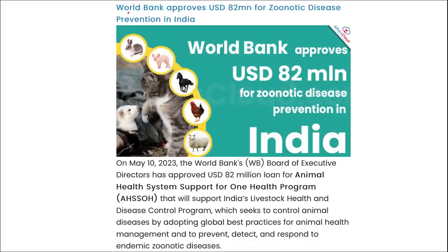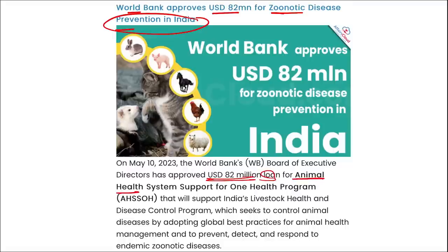World Bank approved $82 million for zoonotic disease prevention in India — specifically an $82 million loan for an animal health system support for one health program. Zoonotic diseases are diseases that are transferred from animals to humans.